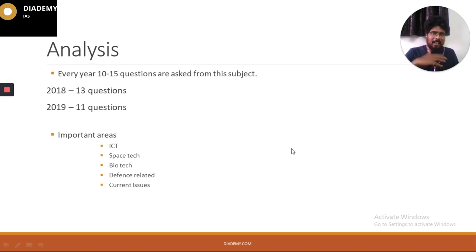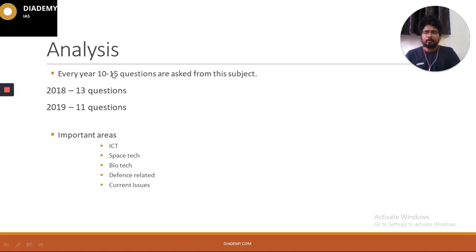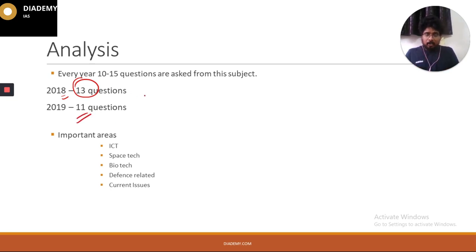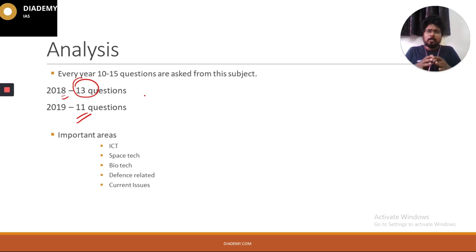Looking at the analysis, every year roughly 10 to 15 questions are asked from science and technology. In 2018, 13 questions were asked, and in 2019, 11 questions were asked. This means science and technology is an area we cannot neglect — we have to score the maximum here, because once you know the concepts, you can answer these questions easily.